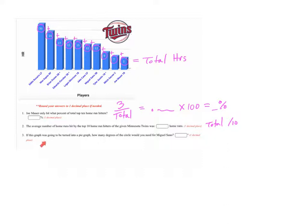Next, we're going to try to figure out if this graph was turned into a pie graph, how many degrees of the circle would Miguel Sano get? Well, Miguel Sano makes 12 out of the total.